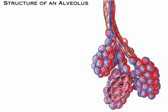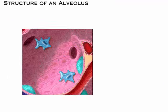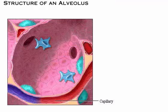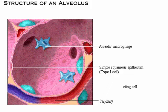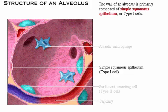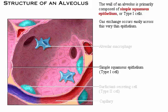Let's look closely at the inside of an individual alveolus. Alveoli contain three types of cells: simple squamous epithelium, alveolar macrophages, and surfactant-secreting cells. The wall of an alveolus is primarily composed of simple squamous epithelium, or type 1 cells. Gas exchange occurs easily across this very thin epithelium.